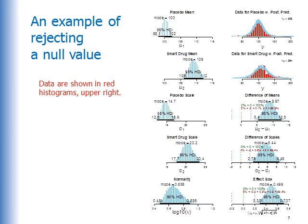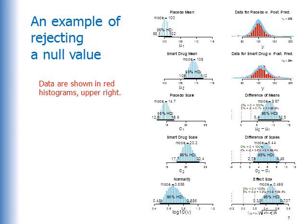Here's an example of rejecting a null value. The data are shown in red histograms in the upper right. We zoom in on the difference of means, difference of scales, and the effect size. For purposes of illustration, the ROPE limits are set at defaults — Cohen's so-called small effect size of 0.2. You can see in the lower right distribution the red vertical lines are marked at the ROPE limits of negative 0.2 and positive 0.2. For real research, we use a predicted effect of a smart drug based on previous drugs and on theory. But in this case, the 95% HDI clearly falls outside the ROPE — the ROPE excludes the HDI.